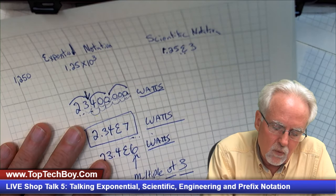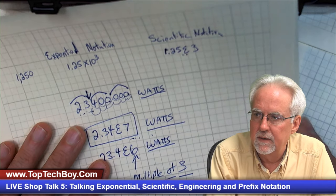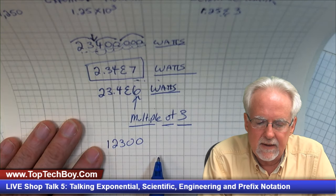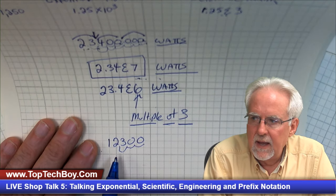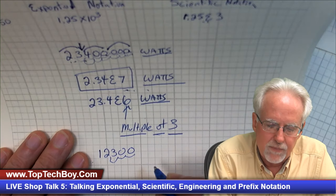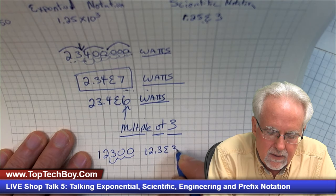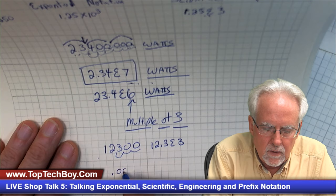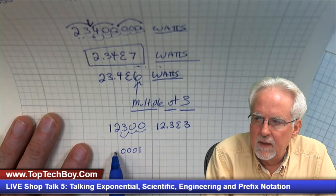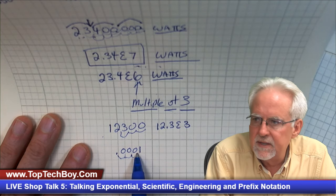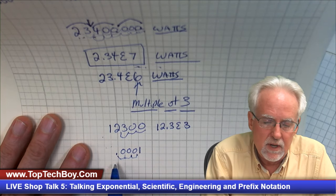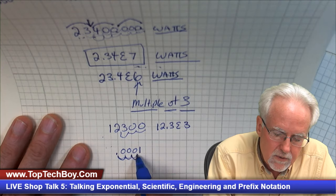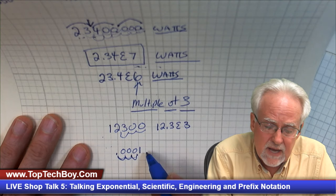So you want to move the decimal to get the largest multiple of 3 that you can. Let's try 12,300. I would move it three places, and I stop because I can't get three more — so this would be 12.3E3. Now what if I had 0.0001? This is a little trickier: I would move one, two, three — but when I'm going this direction, I have to at least get past the decimal. So I can't stop there.